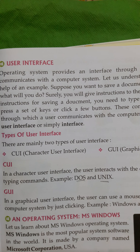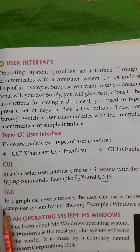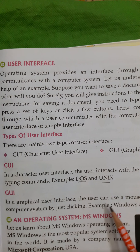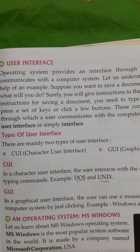But in GUI, the options are there in front of you on the screen. You need to select only — just take your mouse, click on that option, and get your work done. Suppose you want to turn a page: click 'Next' and you go to the next page. If you want a printout, just give the command 'Print' and your page will be printed. GUI is a Graphical User Interface where the user can use a mouse to interact with the computer system by just clicking. Examples are Windows and Linux.